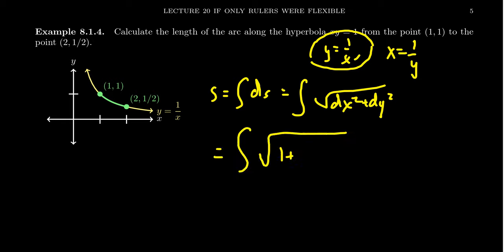So we need to use the formula: the integral of the square root of 1 + (y')² dx. Now y', by the usual derivative rules using the power rule, you're going to get -1/x², and so when you square y' you end up with 1/x⁴.